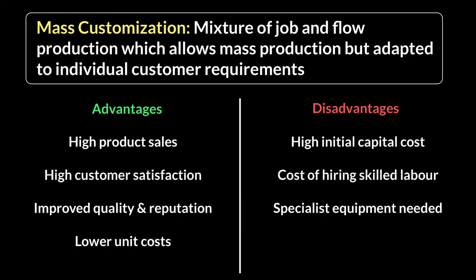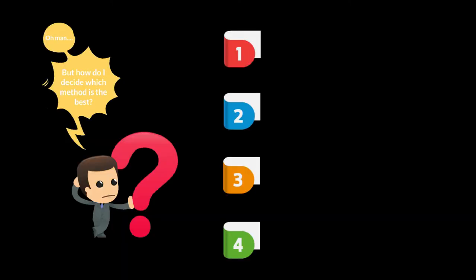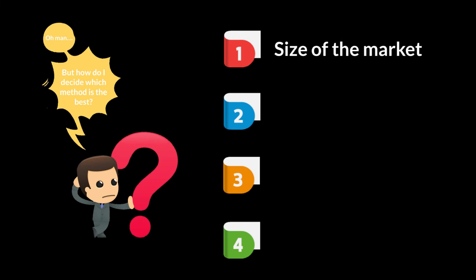All four methods come with some good and some bad, but they're all equally viable options. The question is: how do you decide which method is best for your business? The first thing to assess is the size of the market you're targeting — if it's a small niche, job production may be right; if it's a large market requiring large quantities, flow production is more suitable.